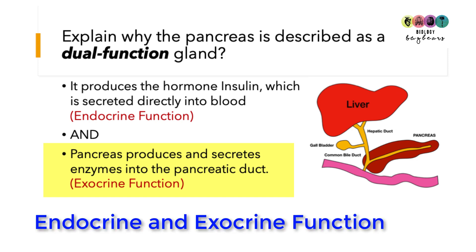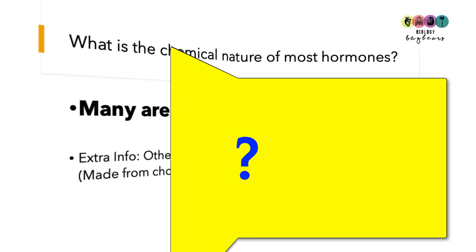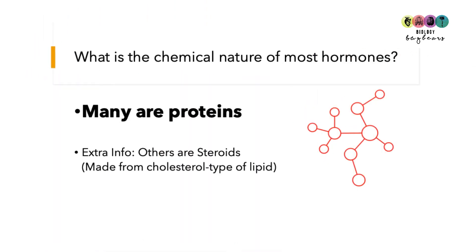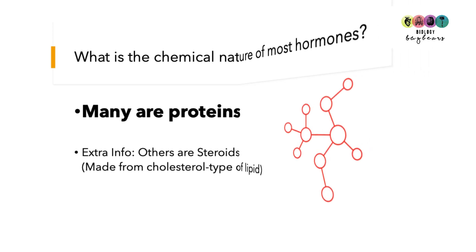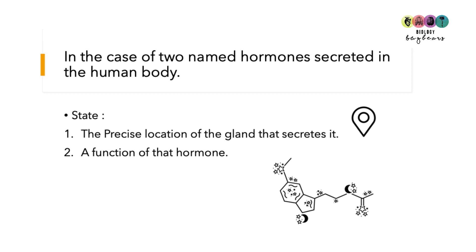So the pancreas has both an endocrine and an exocrine function. The next question is: what is the chemical nature of most hormones? Well, most of them are proteins — that's what you would answer. You should also know that some hormones, particularly the sex hormones, are steroids; they're made from cholesterol, a type of lipid.